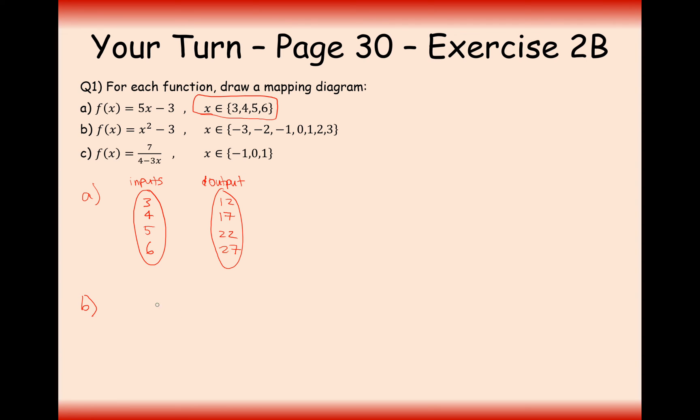Part B is going to look a little bit bigger. We're going to have minus 3, and I'll put 3 next to it, minus 2, and I'll put 2 next to it, minus 1, and I'll put 1 next to it, and 0. Oh, no, actually, it's got a minus 3 on it, so it doesn't work. x squared minus 3, so that's going to be minus 3 will go to 6, 3 will go to 6 as well, and it will look a little bit like this.